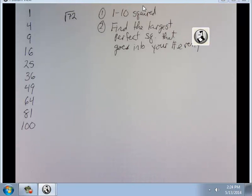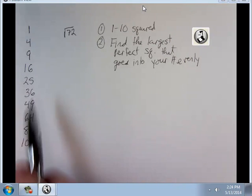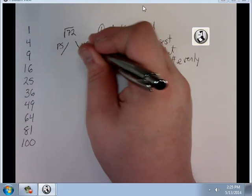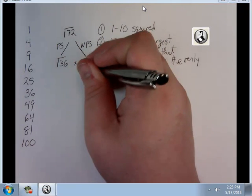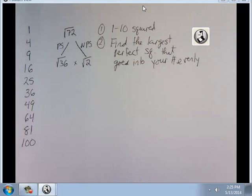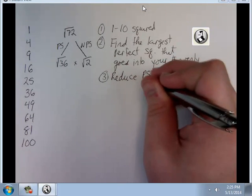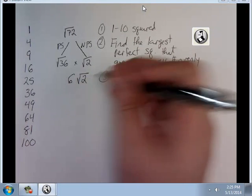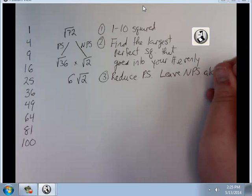And the reason why I always pick 72 is because everyone always starts with, everyone always does 8 times 9. But there is a larger number that goes into 72 that's a perfect square. And that's that one right there. So watch how I write this. I'm going to put my perfect square out front and my non-perfect square in the back. I'm going to do square root of 36 times square root 2. 36 times 2 gives me 72. Now, reduce perfect square. Well, square root of 36 I know is 6. I'm going to leave the other one alone.